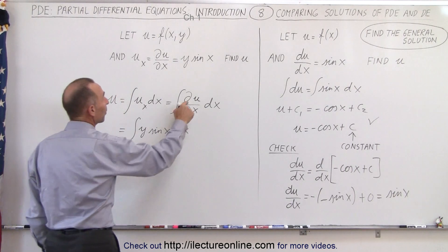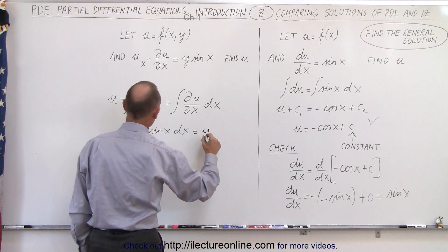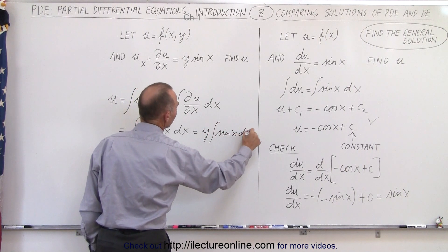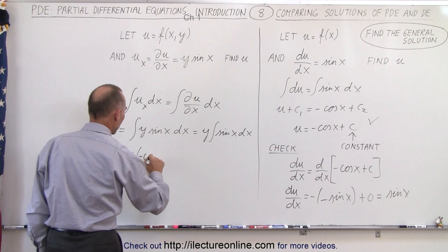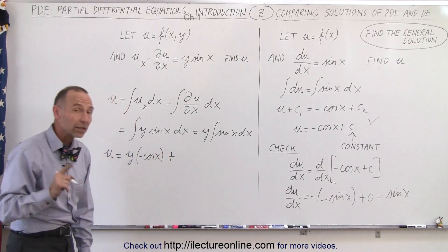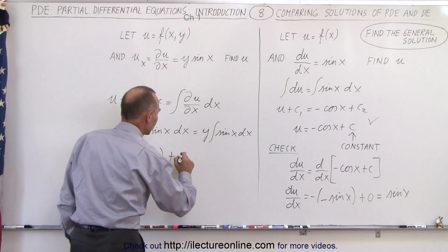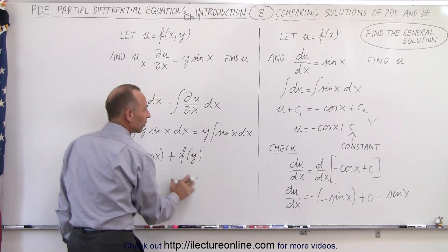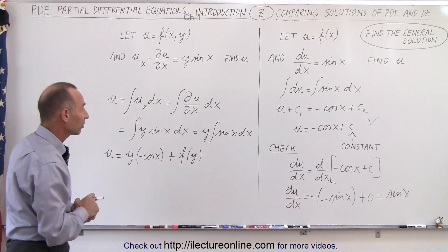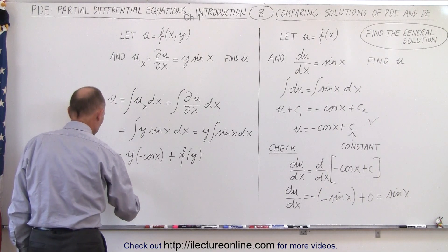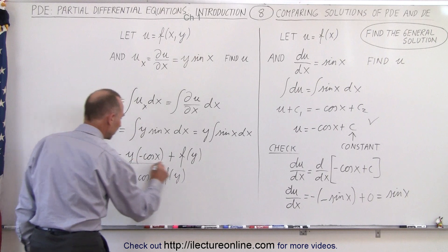Since we have the partial of u with respect to x, y is going to be a constant, so we can take it outside the integral sign and write it as y times the integral of the sine of x times dx. When we integrate that, we get u equal to y times the negative cosine of x. But now we have to add not a constant of integration but a function of integration — a function of the variable that remains constant, which in this case is y. So we add f(y). Simplifying, u is equal to minus y times the cosine of x plus some function f(y). And that is the solution.